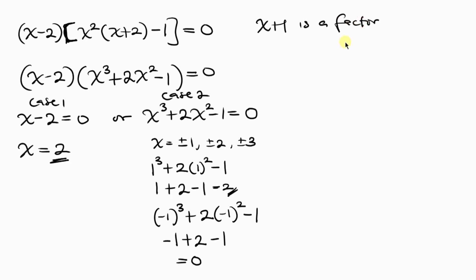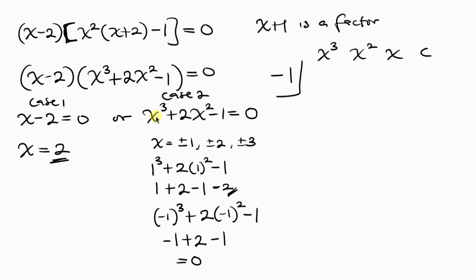Now let's perform synthetic division. We keep -1 as our divisor and write down the coefficients of x³ + 2x² + 0x - 1, which are: 1, 2, 0, and -1. The coefficient of x is 0 since there is no x term.